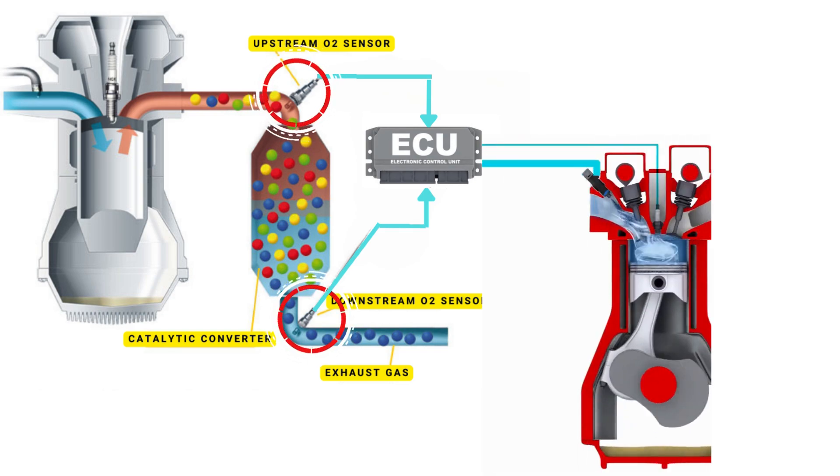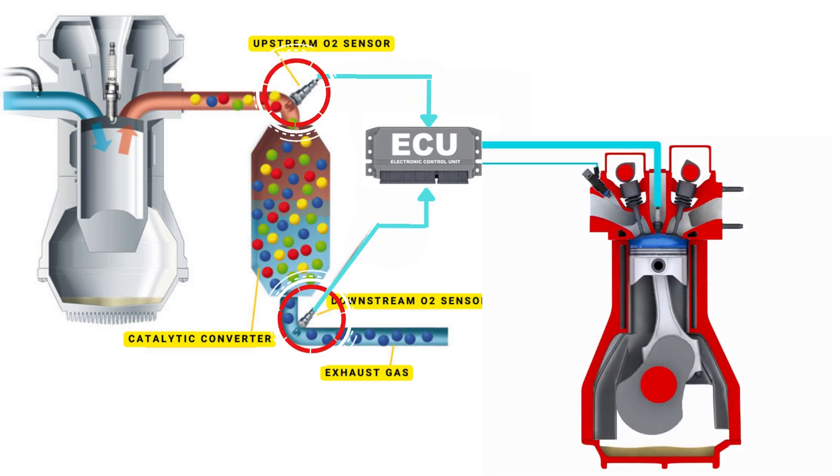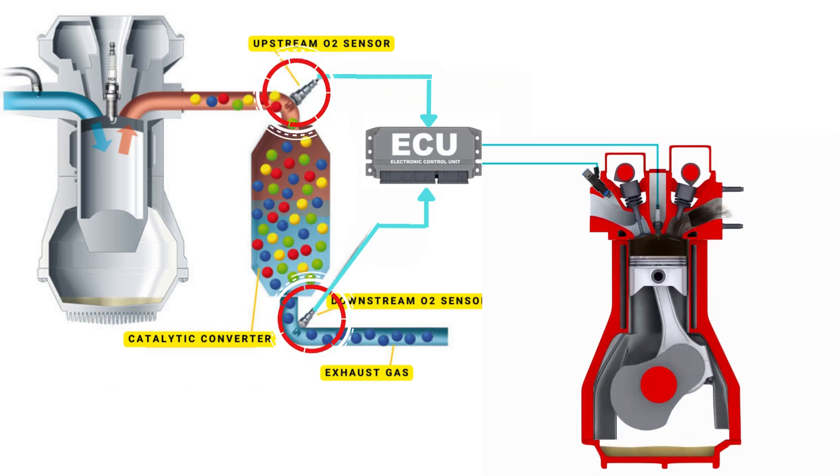The ECU controls the air-fuel ratio by adjusting the timing of the engine's valves, allowing just the right amount of air and fuel to enter the combustion chamber.